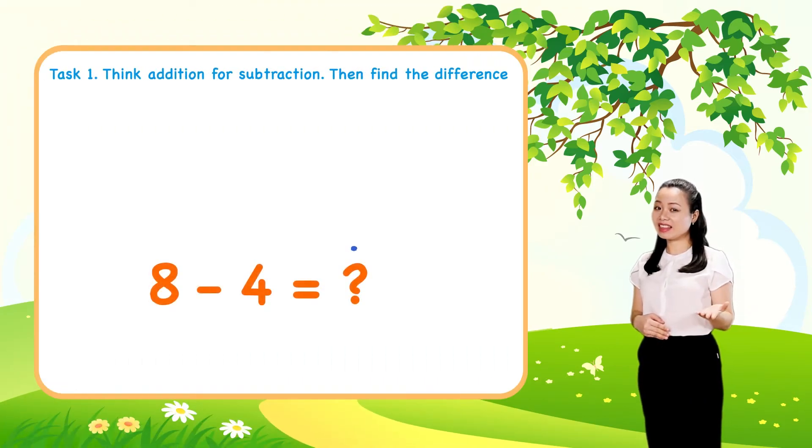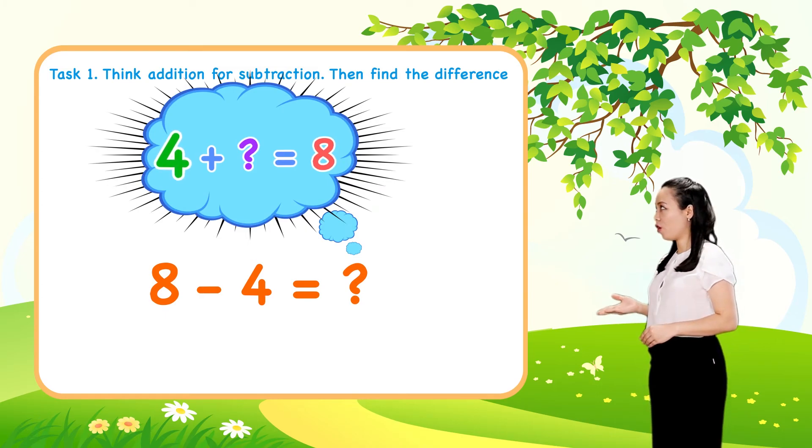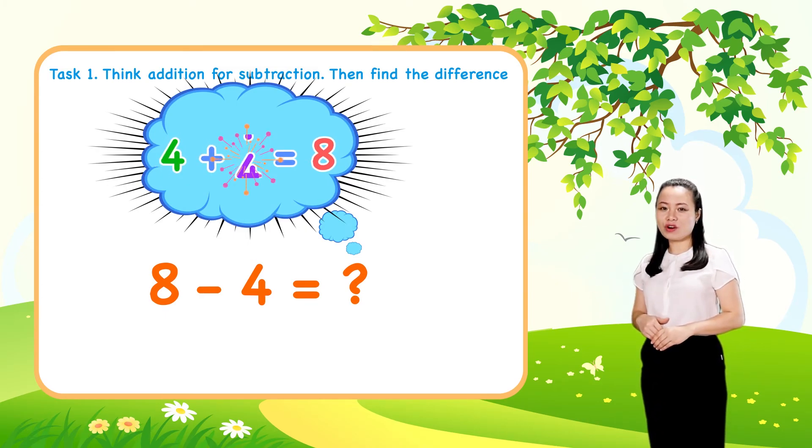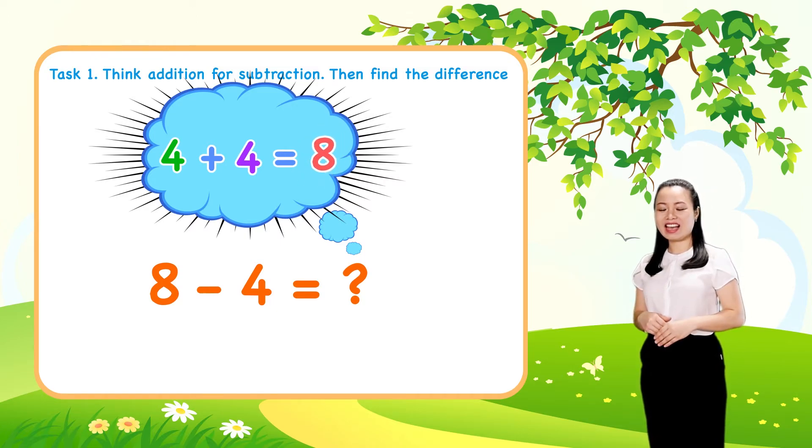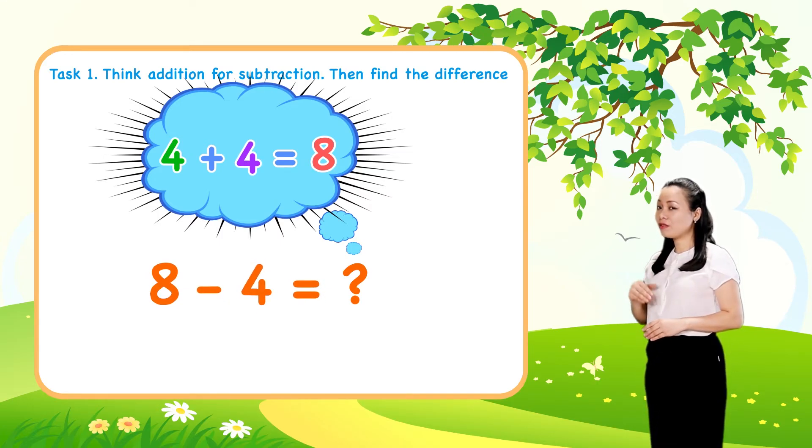Next, think 4 plus 4 equals 8. So 8 minus 4 equals 4.